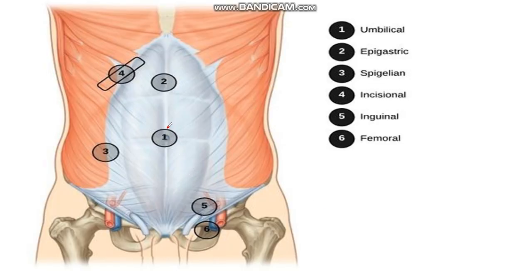Here you can see the umbilical point, so there can be umbilical hernia. We have discussed from the xiphoid process up to the umbilicus where there can be epigastric hernia. Then we have the incisional hernia, then the Spigelian hernia, the inguinal hernia, and the femoral hernia.